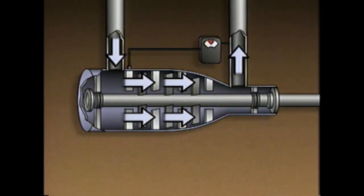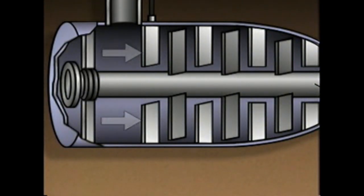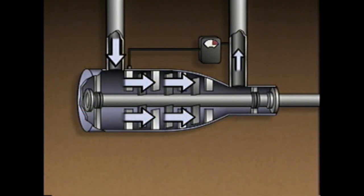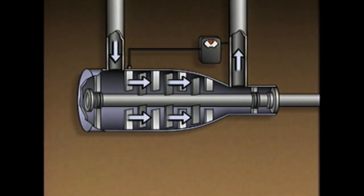On the other hand, if the demand for gas decreases, discharge pressure increases. The pressure controller responds to the increase in pressure by closing the inlet guide vanes. As a result, the flow of gas into the compressor is reduced, less gas is compressed, and the discharge pressure returns to the desired value. So by adjusting the flow of gas into the compressor, the control system maintains the discharge pressure of the compressor at the desired value.